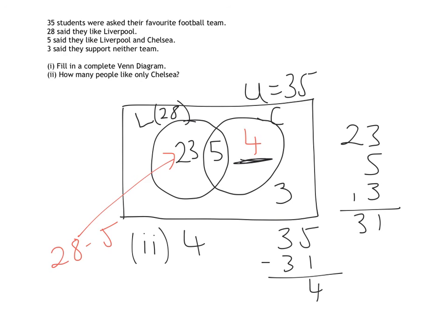If you thought the answer was 9, that is everyone who likes Chelsea, but who also might like Liverpool, whereas the 4 represents people who only said they liked Chelsea.